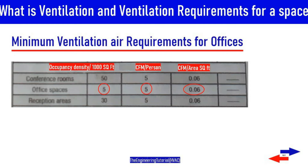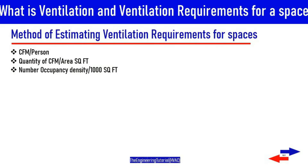The amount of outdoor air required for a space is often prescribed by local building codes or industry standards such as ASHRAE Standard 62, Ventilation for Acceptable Indoor Air Quality. This standard prescribes the quantity of outdoor air required per person or per unit area to provide adequate ventilation for various types of spaces.